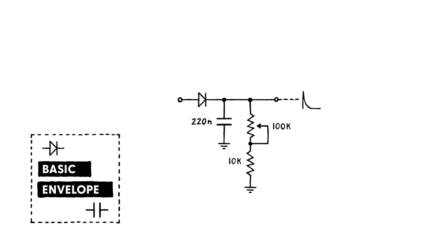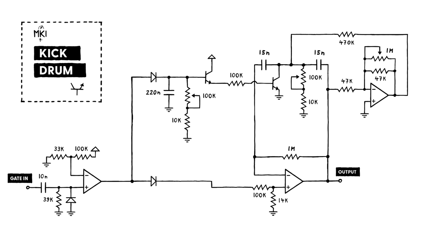But before we can send this into our transistor, we need to isolate the output node. That's because if we don't, current will drain out of the cap through that output node, interfering with the controlled discharging process. Normally, I'd use an op-amp buffer here. But in this case, we can actually be a bit more efficient and use an NPN transistor instead.